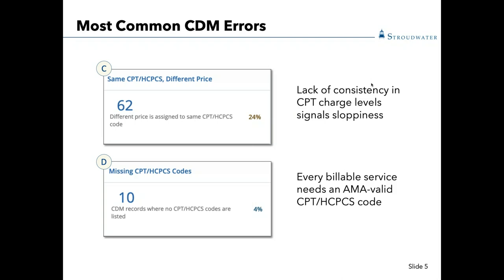The next one is missing CPT and HCPCS codes. This is important because if there is no CPT or HCPCS code dropping on the claim, there is no way to bill for that service. You will have a certain charge drop in your electronic health record system, but that charge will not correlate to a claim that can be sent to a payer. So you can end up having charges in your system that will not correlate to any revenue going forward.